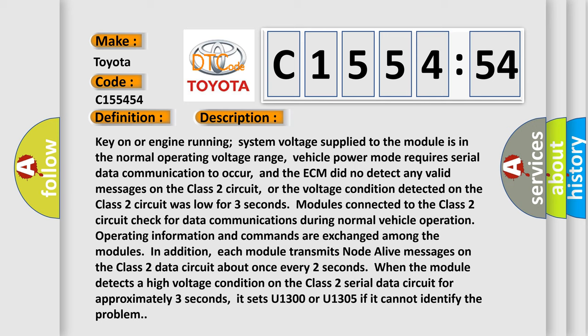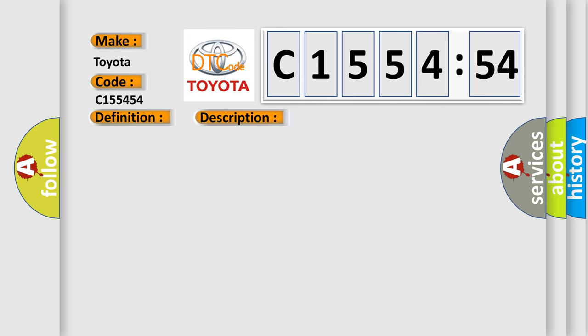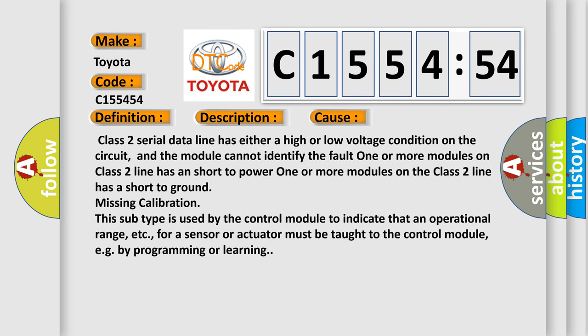Each module transmits node alive messages on the Class 2 data circuit about once every two seconds. When the module detects a high voltage condition on the Class 2 serial data circuit for approximately three seconds, it sets U1300 or U1305 if it cannot identify the problem.